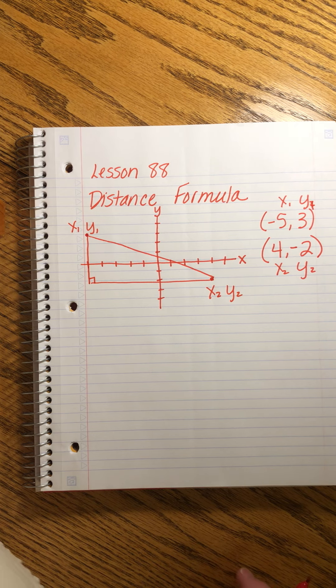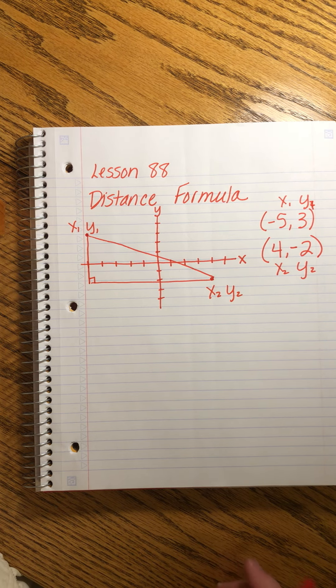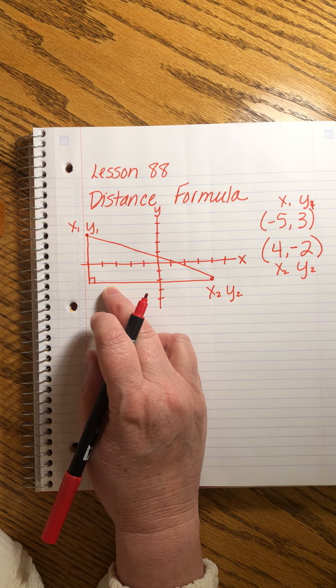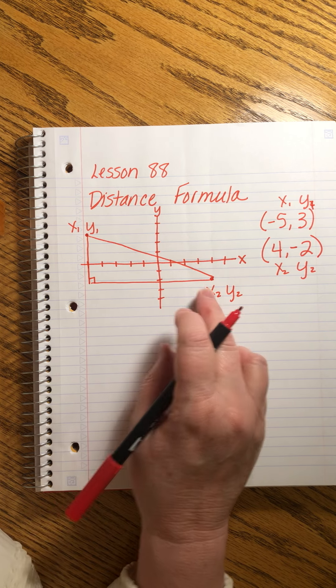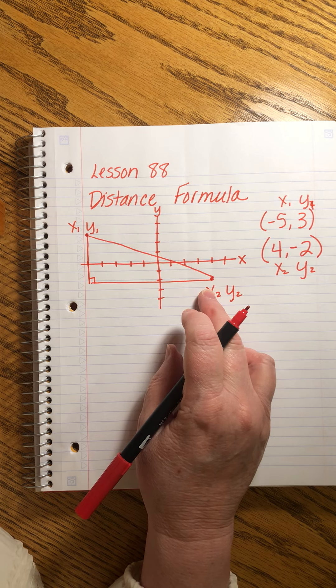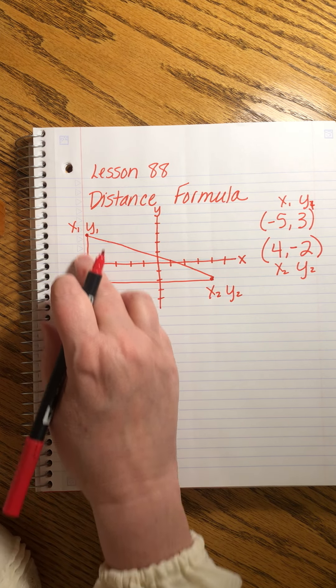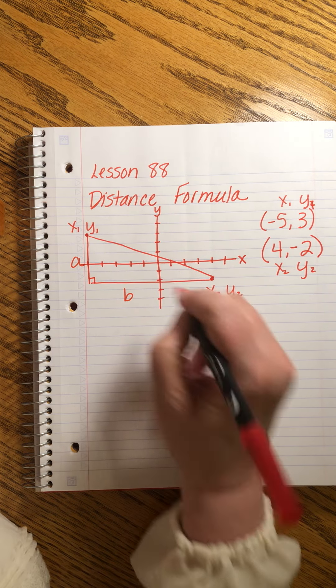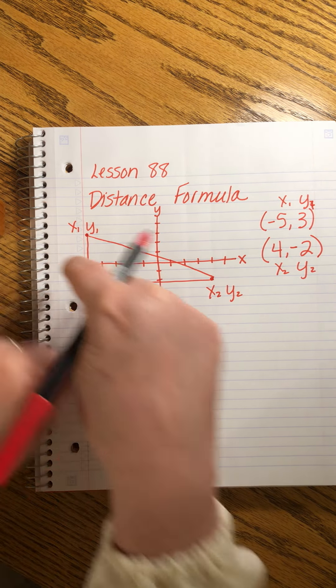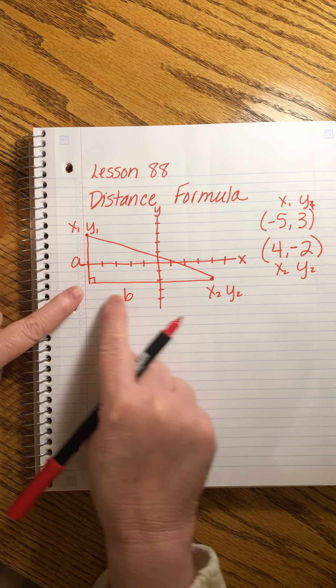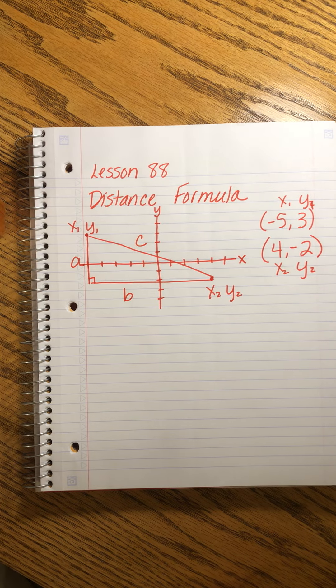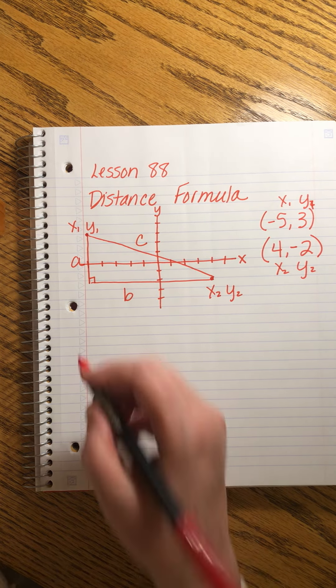Now we know that when we have a right triangle we can also use the Pythagorean theorem to solve for any missing sides. This side we can call a, this side we can call b. Of course we know we can call them by either letter as long as the two legs are the a and the b. The hypotenuse has to be the c.